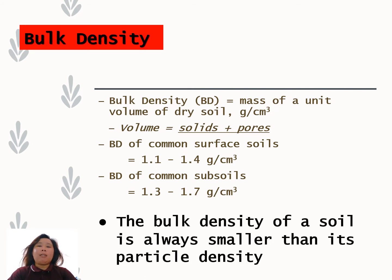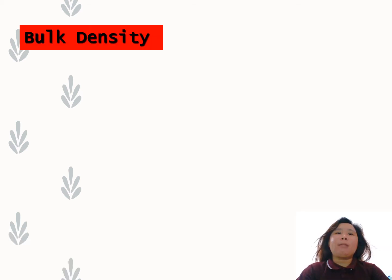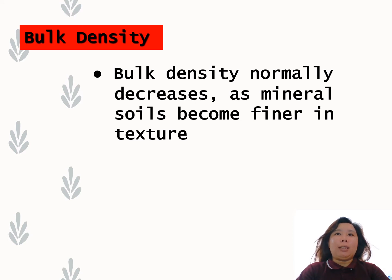Notice that bulk density is smaller than particle density. The average particle density is 2.65 g/cm³, so remember: bulk density is always smaller than particle density, because pore spaces are included in the calculation. Bulk density normally decreases as mineral soils become finer in texture — the finer the soil texture, the lower the bulk density.